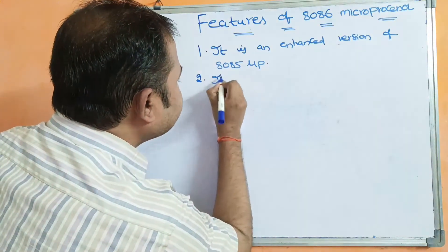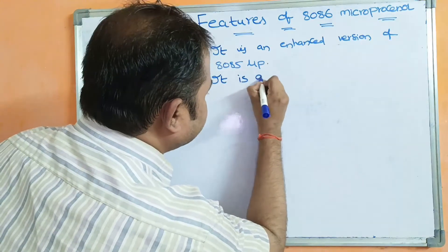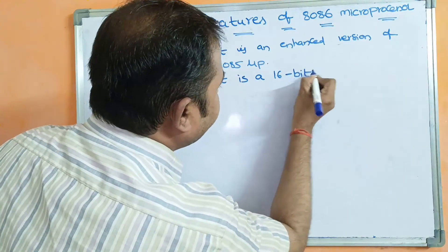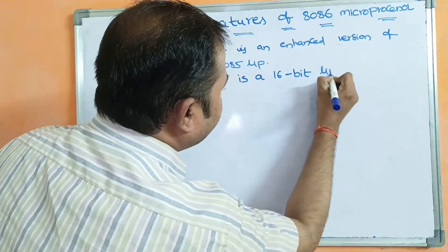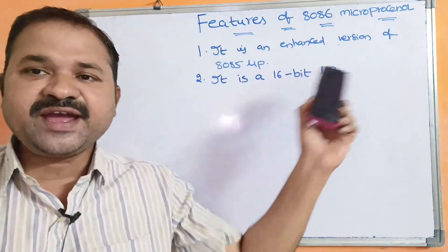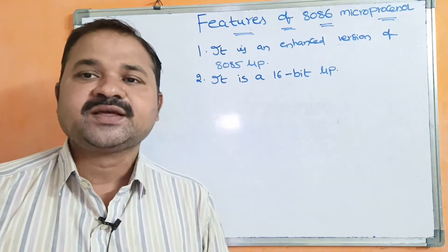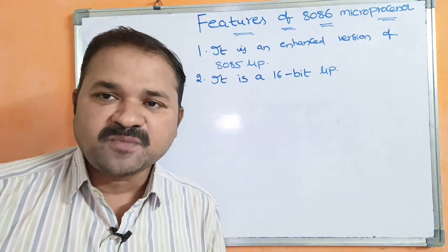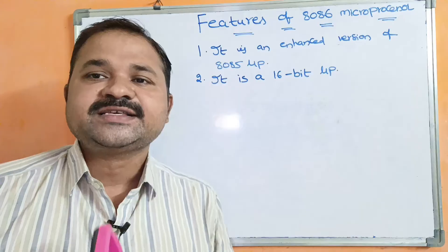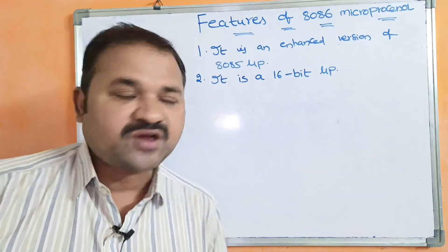The 8086 is a 16-bit microprocessor. That means it performs operations on 16-bit data in one clock cycle.